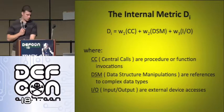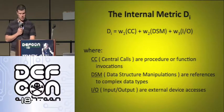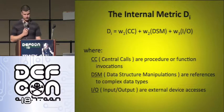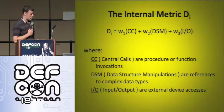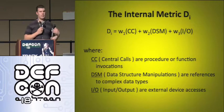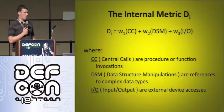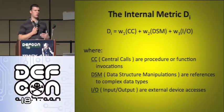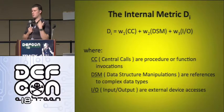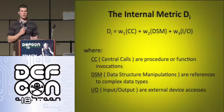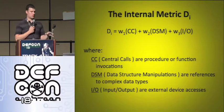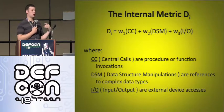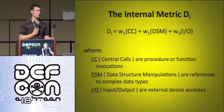Then we have an internal metric D sub I, which is a measure of the internal complexity of a module. The equation has your control calls, data structure manipulations, and input/output — each weighted by W1, W2, and W3 respectively. Those weights let you give more focus to specific components; for example, W2 could be set to two or three for data structure manipulations. For all our metrics, unless the people funding us request a specific weight, W1, W2, and W3 are always set to one.